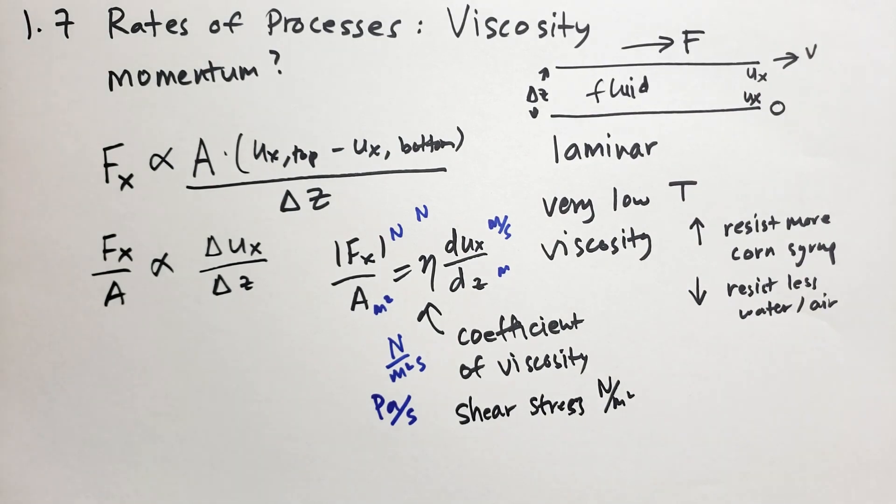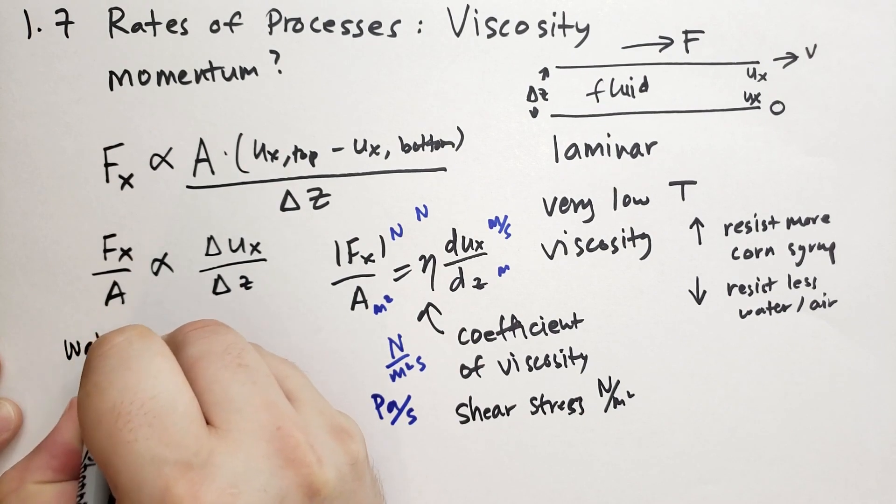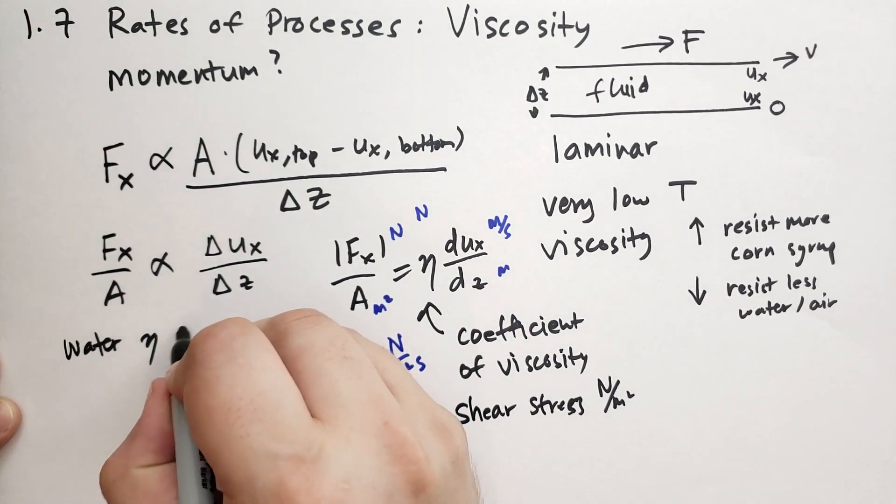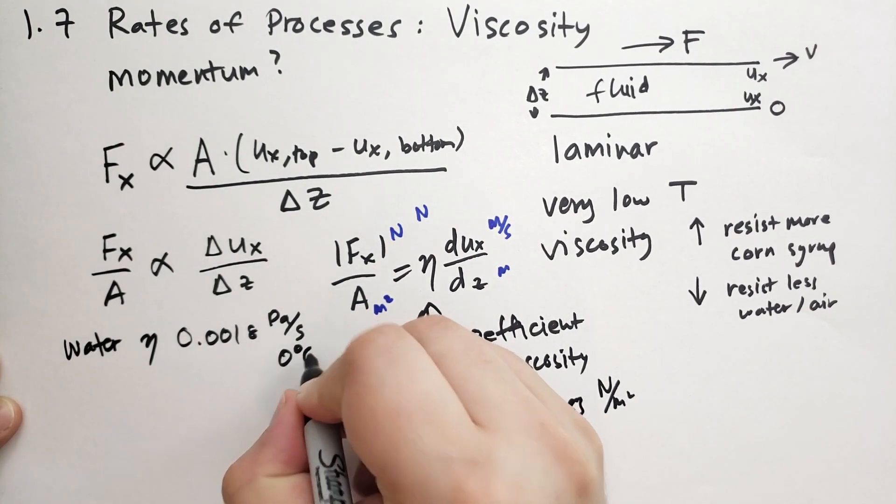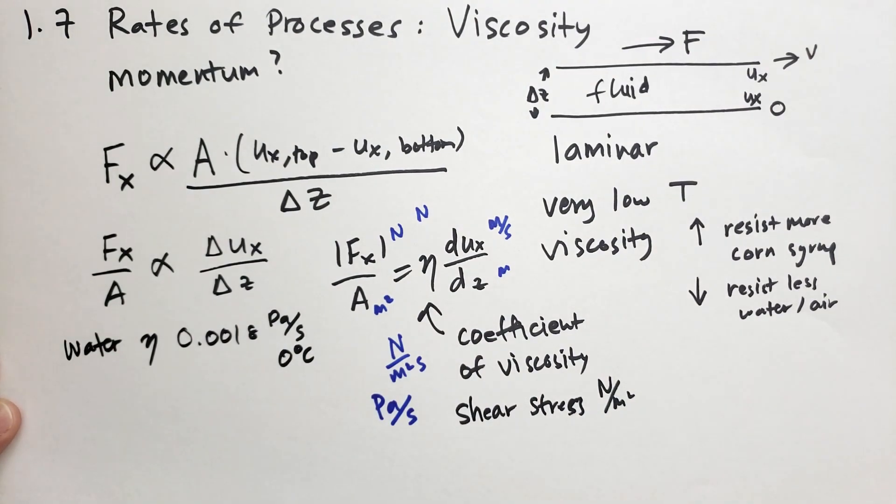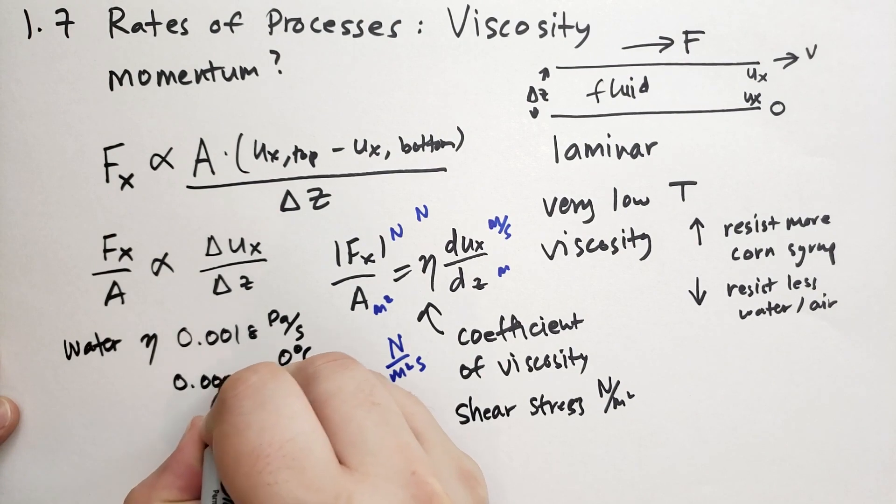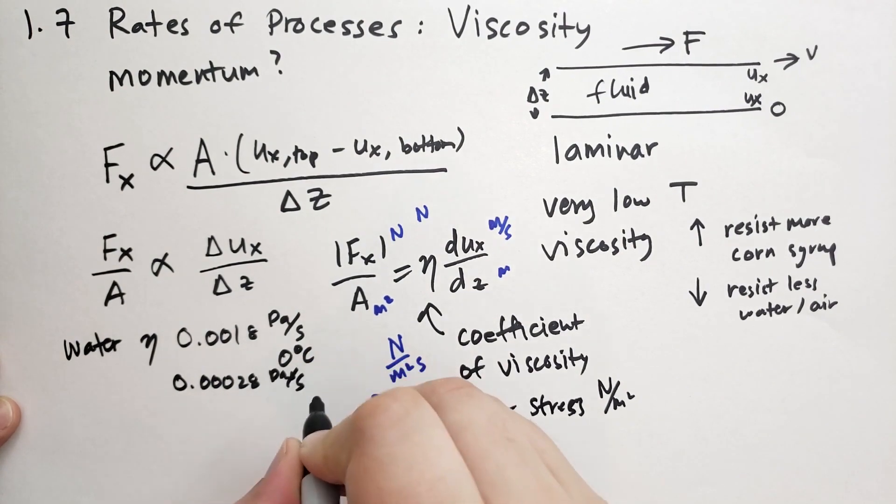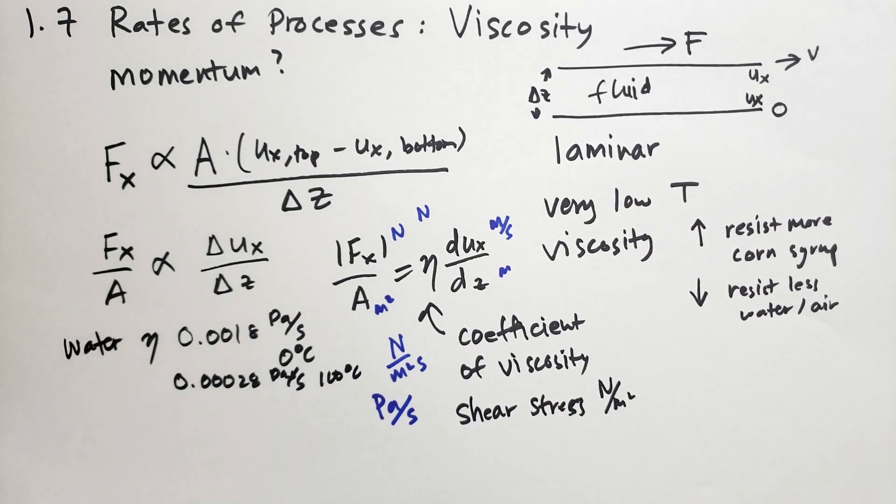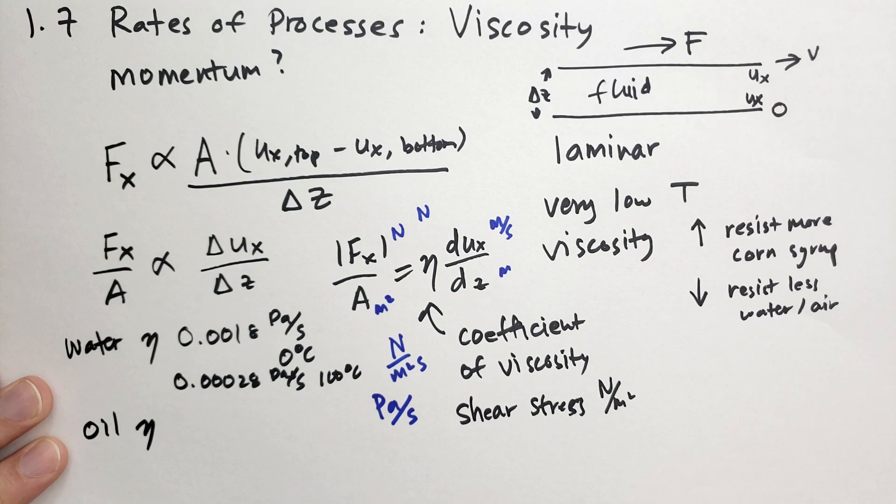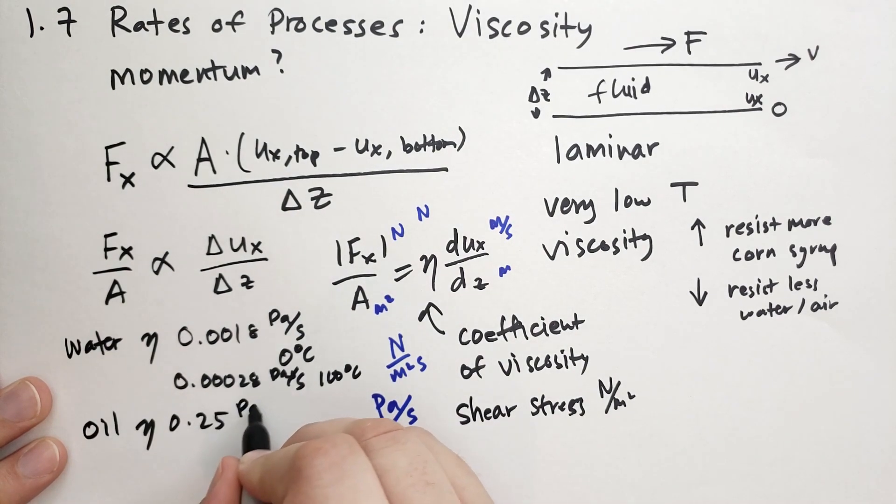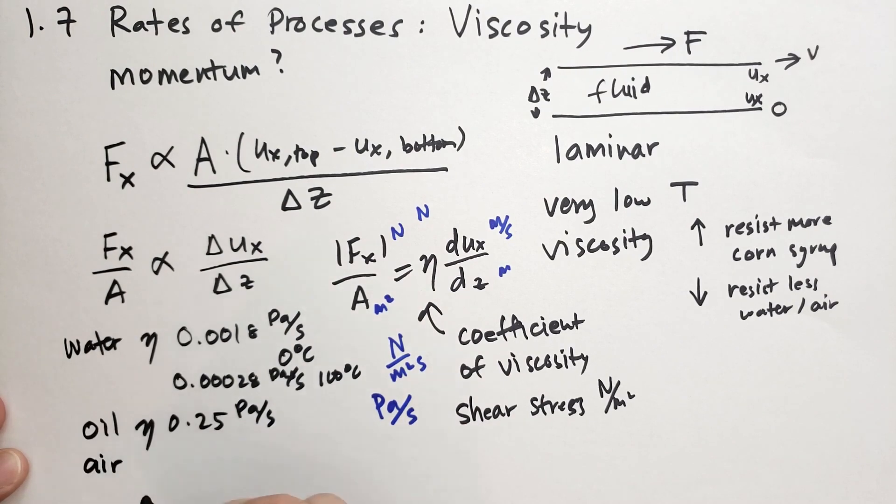Some typical viscosities you might see: water has an eta of 0.0018 pascals per second at 0 degrees Celsius, but that lowers significantly to 0.00028 pascals per second at boiling point, 100 degrees Celsius. Motor oil SAE 10 has an eta of 0.25 pascals per second. Air has 19 micropascals per second.